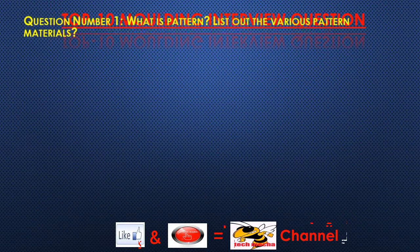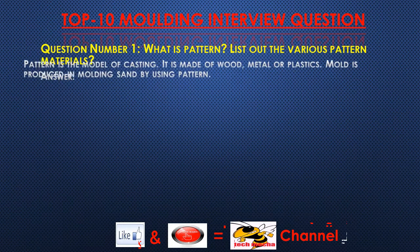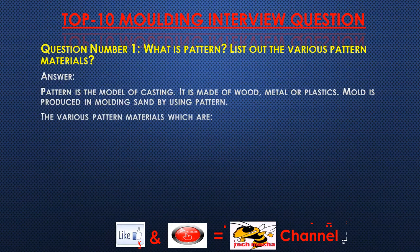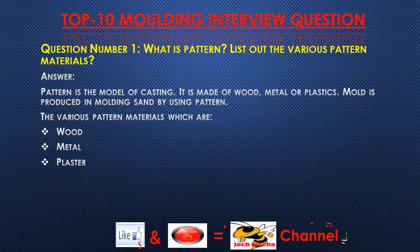Question number one: What is a pattern? List out the various pattern materials. Answer: A pattern is the model of a casting. It is made of wood, metal, or plastics. A mold is produced in molding sand by using a pattern.